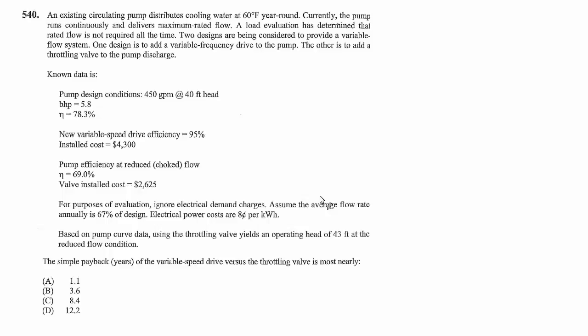Known data is pump design conditions: 450 GPM at 40 feet ahead, brake horsepower 5.8, and efficiency 78.3%. New variable speed drive efficiency is 95%, and installed cost is $4,300.